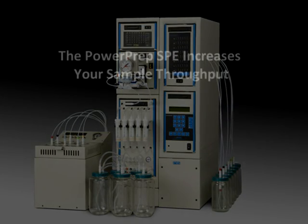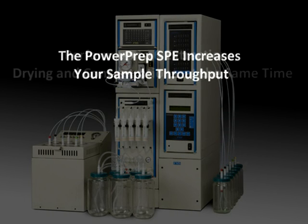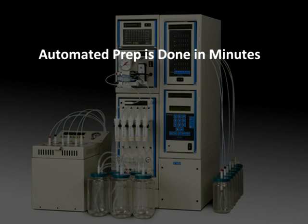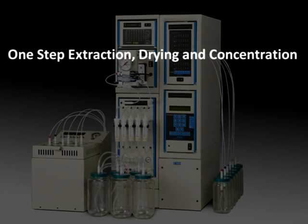The PowerPrep SPE increases your sample throughput. Perform up to six extractions, drying and concentrations at the same time. Automated prep is done in minutes. Five samples per module for up to 30 sample extractions. One step extraction, drying and concentration.